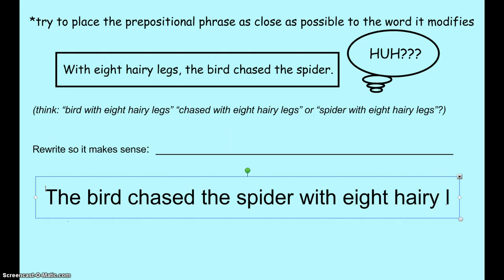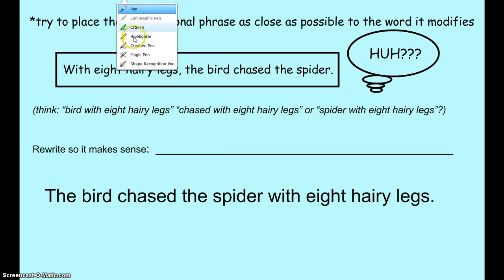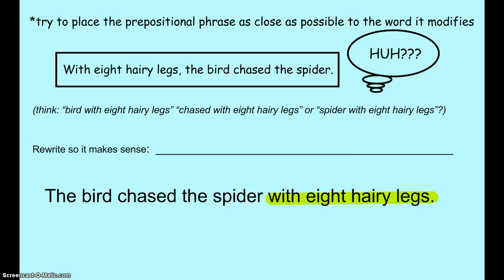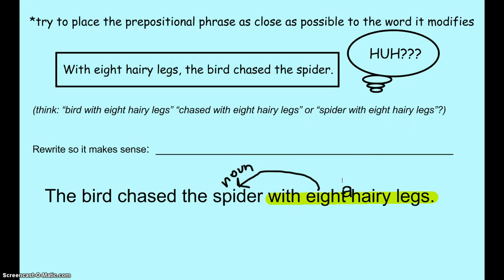The corrected sentence is: 'The bird chased the spider with eight hairy legs.' Going through the process, 'with eight hairy legs' is the prepositional phrase. Checking what it describes — 'the with eight hairy legs,' 'bird with eight hairy legs,' 'chased with eight hairy legs,' or 'spider with eight hairy legs' — obviously it's describing the spider. Spider is a thing, so it's a noun. Looking at the chart, what's allowed to modify a noun? An adjective. So this whole phrase is doing the job of an adjective.